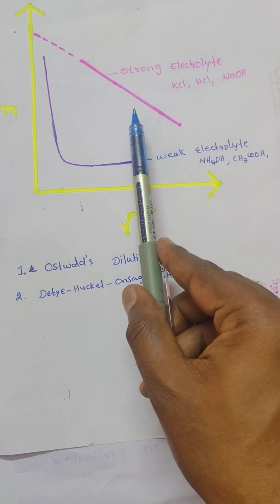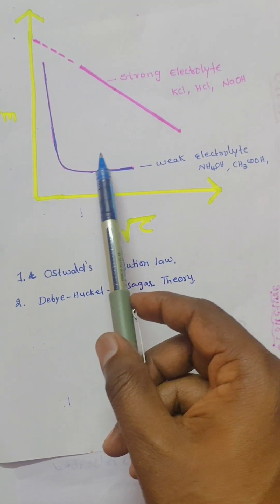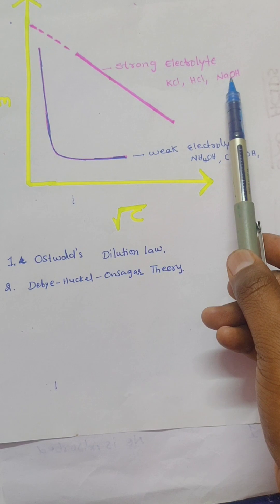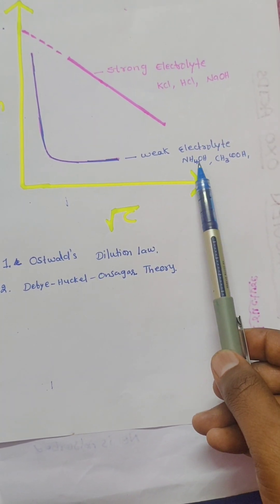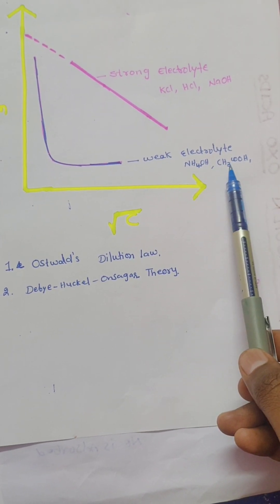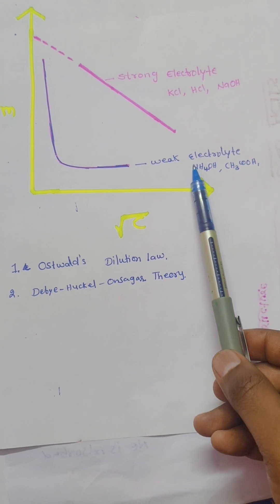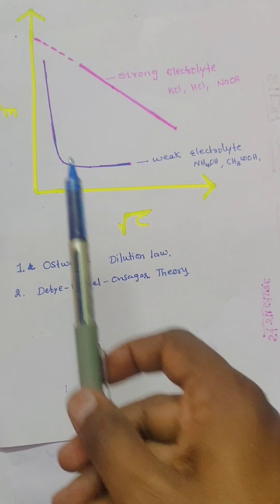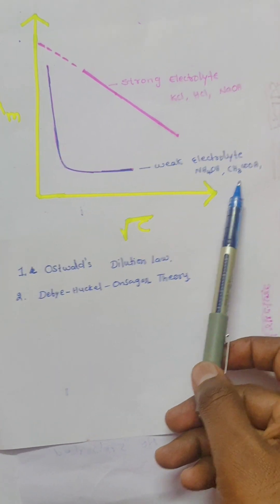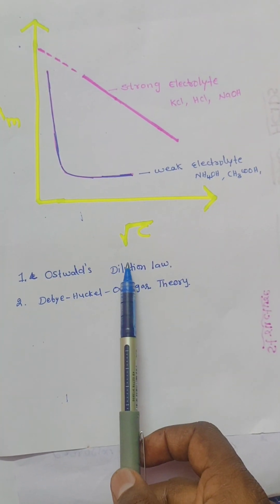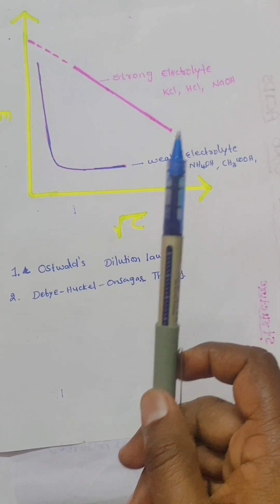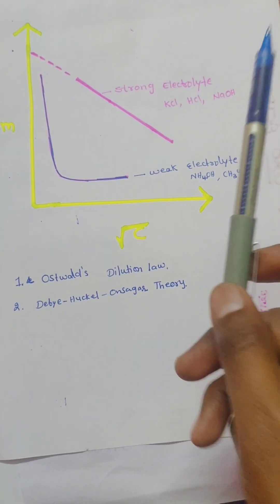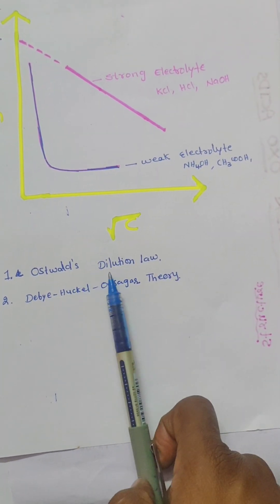This is the plot for strong electrolytes and this is the plot for weak electrolytes. Strong acids like HCl and strong bases like NaOH are examples of strong electrolytes. Weak bases like ammonium hydroxide and weak acids like acetic acid are the best examples of weak electrolytes. Ostwald's dilution law explains very well why the molar conductivity of weak electrolytes increases on dilution, but it cannot explain why the molar conductivity of strong electrolytes increases on dilution. For that purpose, the Debye-Hückel-Onsager theory was put forward.